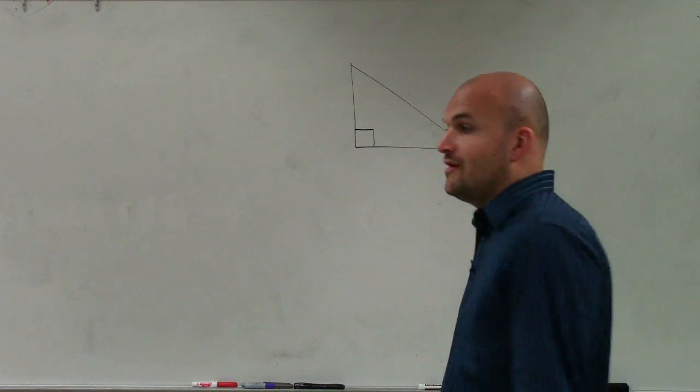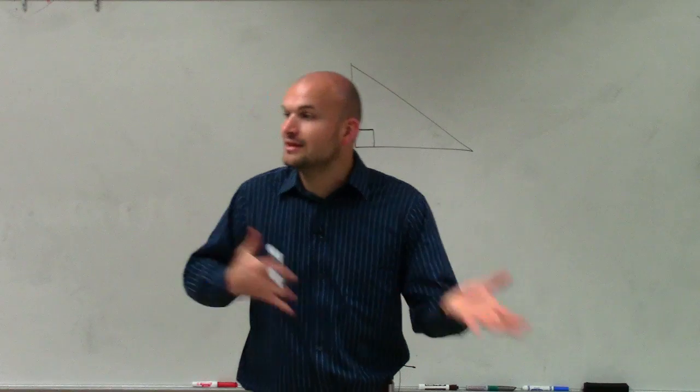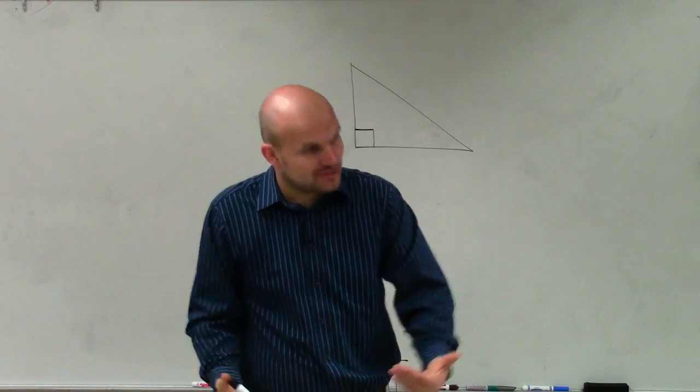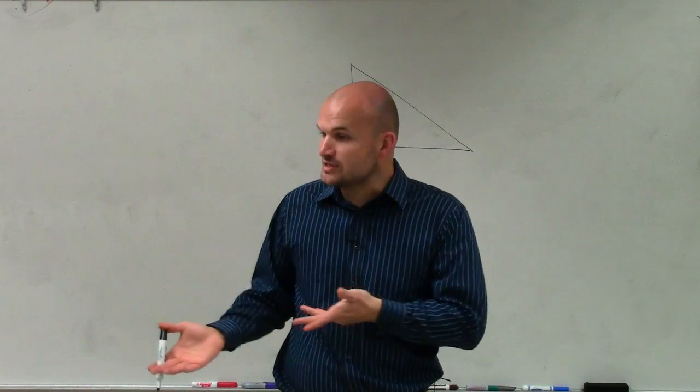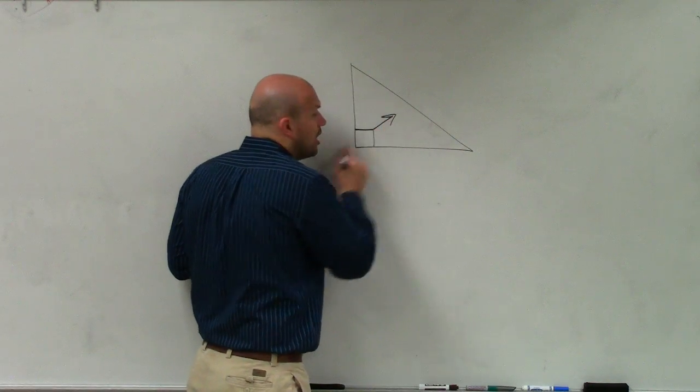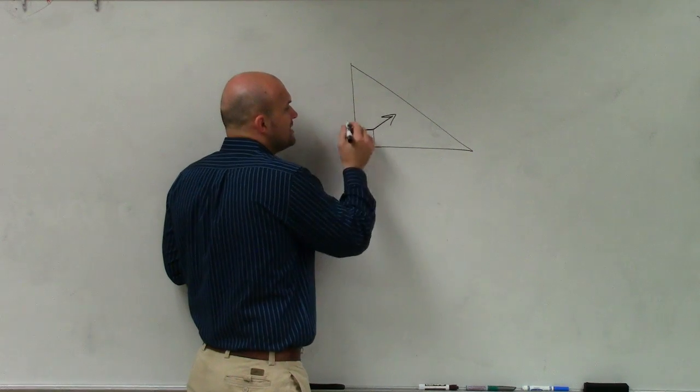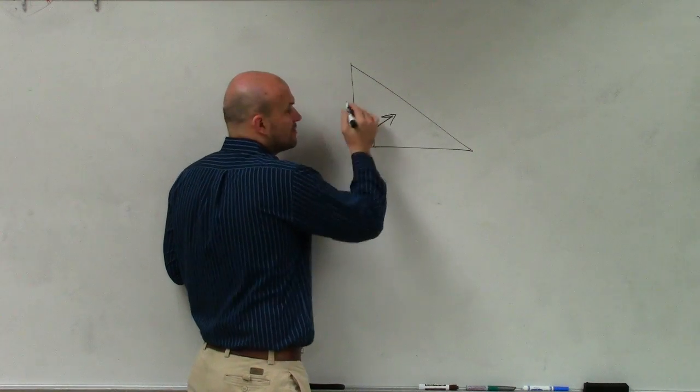When talking about the right triangle, we've always been talking about the legs and the hypotenuse. And just to remind you, because you do that in special right triangles, the hypotenuse was always directly across from your right angle.